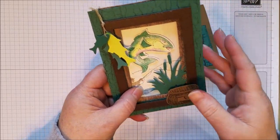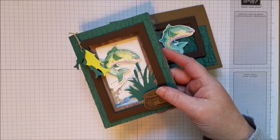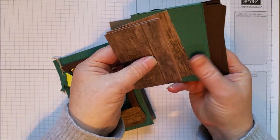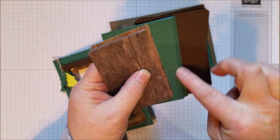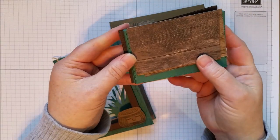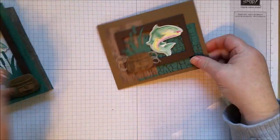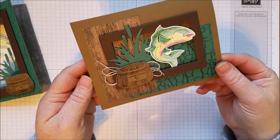I also did this at a stamp camp with 20 people, so I had a lot of these rectangle cut out pieces with the fun stitching around them, and I thought I needed to come up with a way to use these. So I have a second version of the Best Catch card, it's a little more simple.